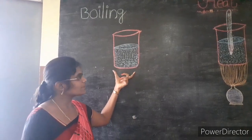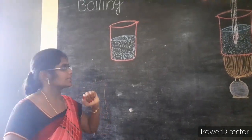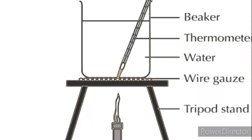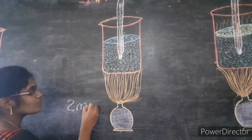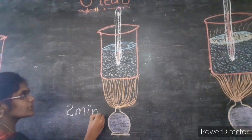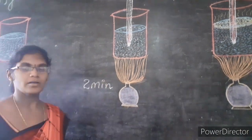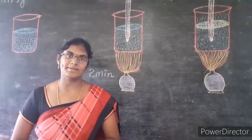I will explain this topic by taking a small activity. Take a beaker full of water and place it on a Bunsen burner, insert a thermometer into the water, and note the temperature readings every two minutes. Children, can you observe any change in the value of the thermometer?